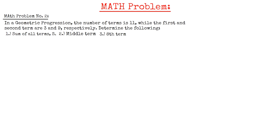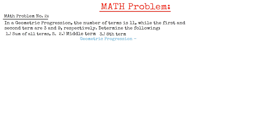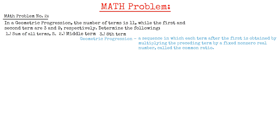Our previous problem involves arithmetic progression, and we have learned that in arithmetic progression the difference between each consecutive term is constant. And now this problem involves geometric progression. Geometric progression by definition is a sequence in which each term after the first is obtained by multiplying the preceding term by a fixed non-zero real number, called the common ratio.